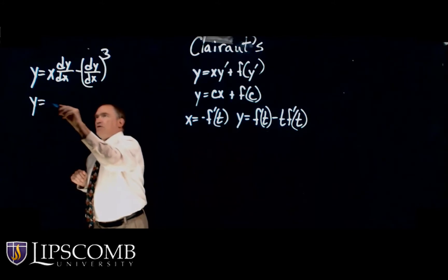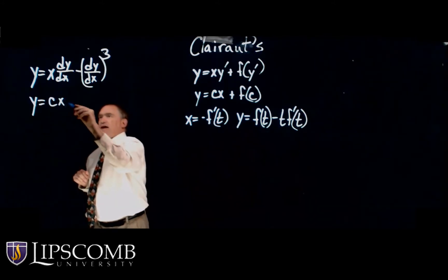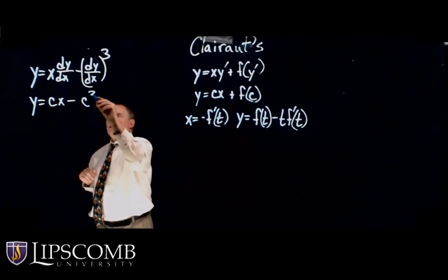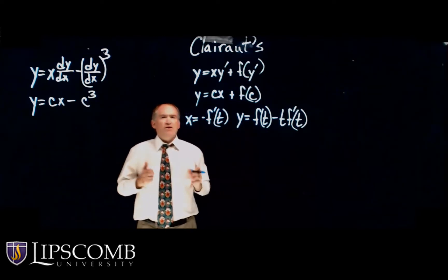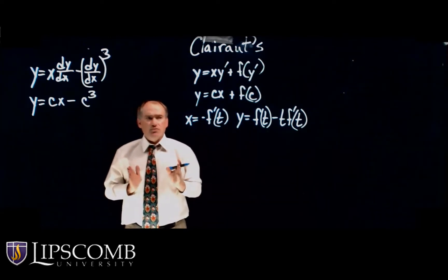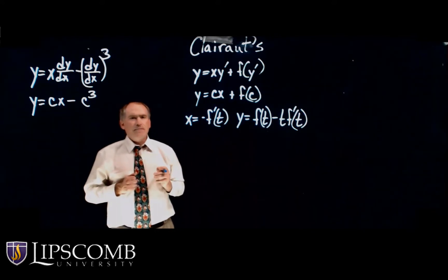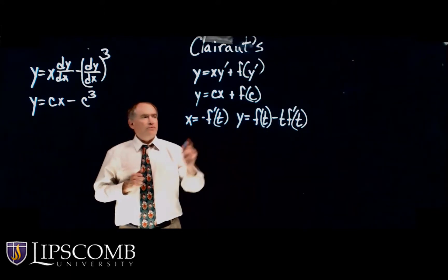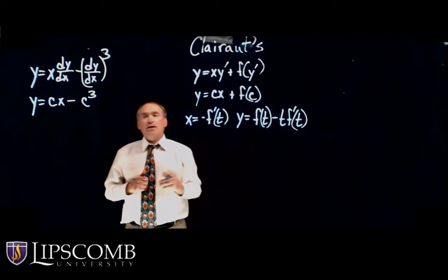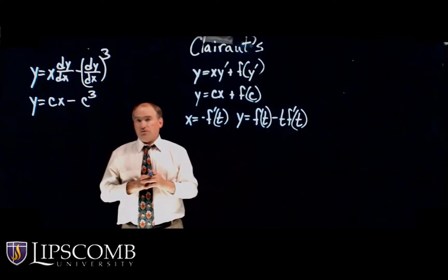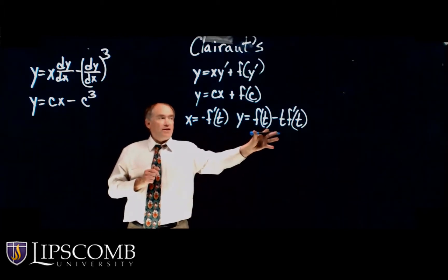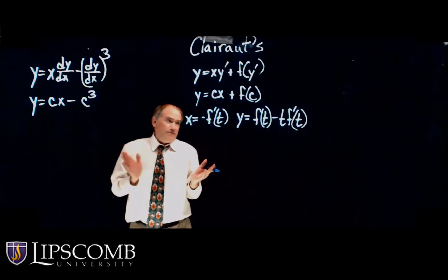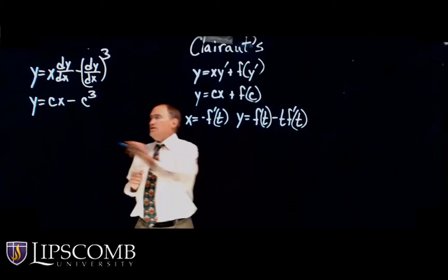Y equals C times X minus C cubed. So that is a family of solutions to this differential equation. Now I want to find a singular solution. So I want to get it in this form. So the first thing I've got to figure out is what is F of T?